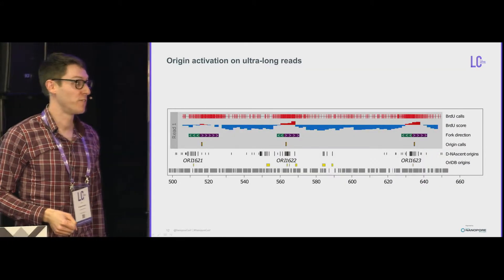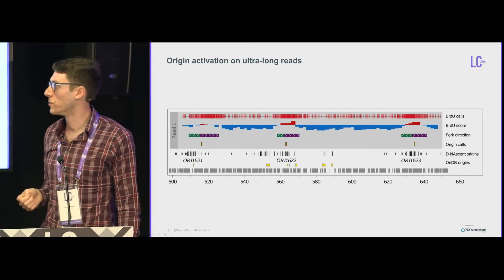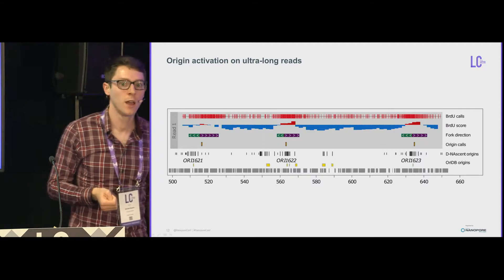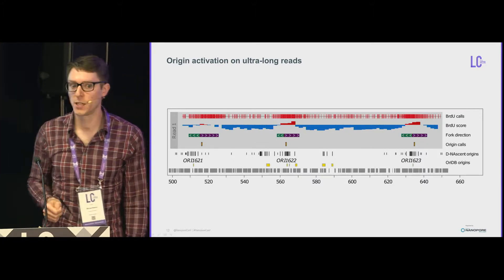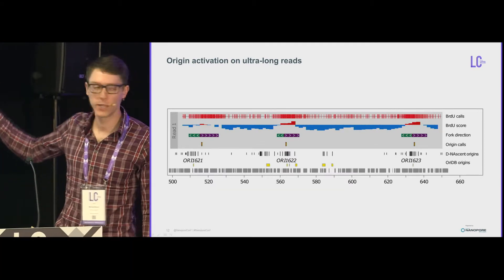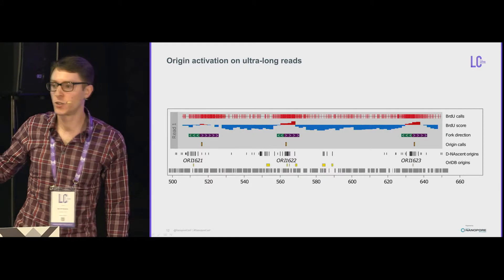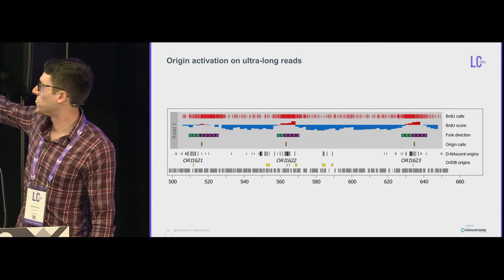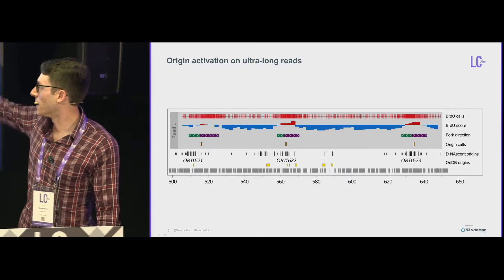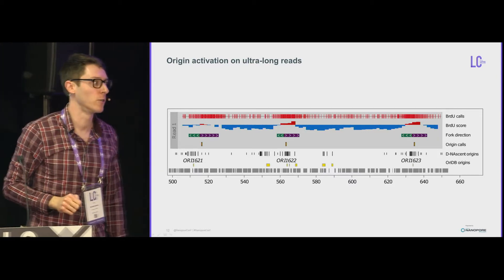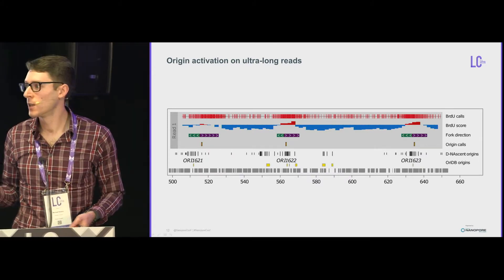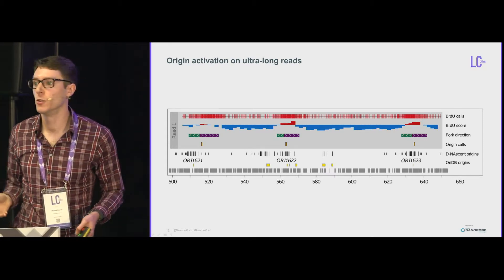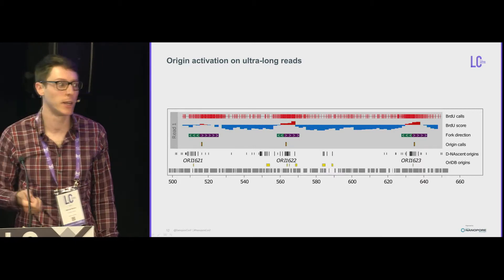Nanopore sequencing reads tend to be very long, and this opens up a lot of really exciting possibilities. Here's a 160 kb read that maps to S. cerevisiae chromosome 16 — we've gone as high as about 250 kb reads. What's exciting about this is you cover a really quite large portion of the chromosome, so you can detect multiple origins being activated on the same read. In this particular read, we see three origins that fired, and again they correspond to the locations of known origins in cerevisiae. This opens up a lot of questions. People tend to think that origin initiation might be independent of one another, but with this method you can look at how origin activation is regulated in cis, which is quite exciting.